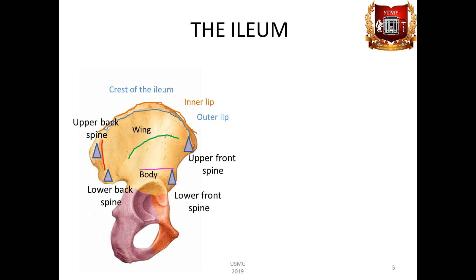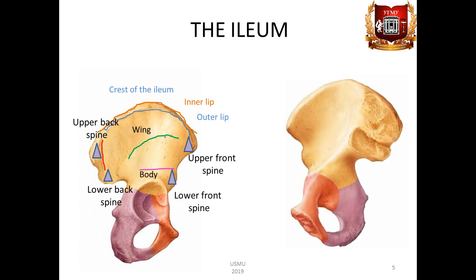The inner surface of the wing is slightly curved and forms the iliac pit, fossa iliaca. The lower boundary of the fossa is the arched line, linea arcuata. Behind the iliac fossa is the auricular surface, facies auricularis, for articulation with the sacrum. Above the auricular surface is located the iliac protuberance, tuberositas iliaca, for interosseous ligament attachment.